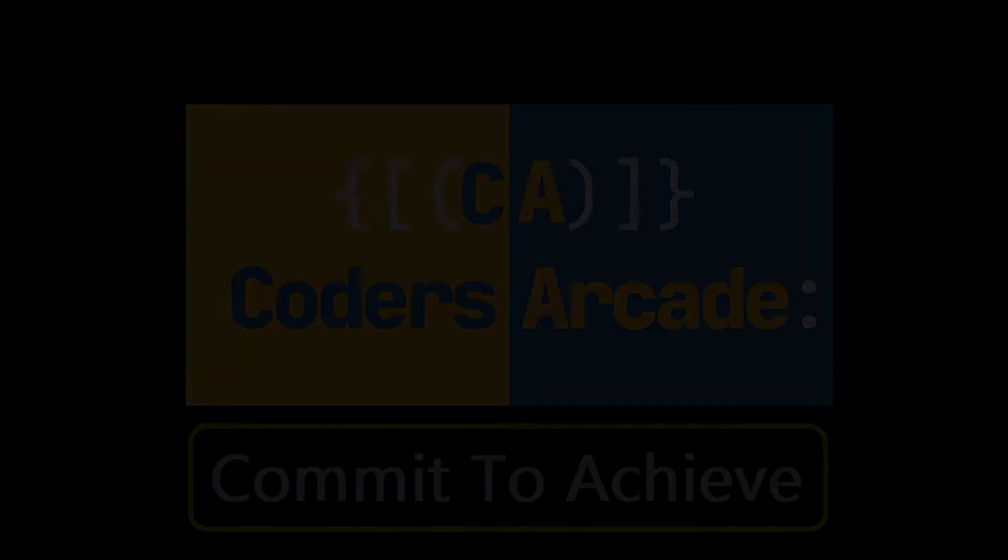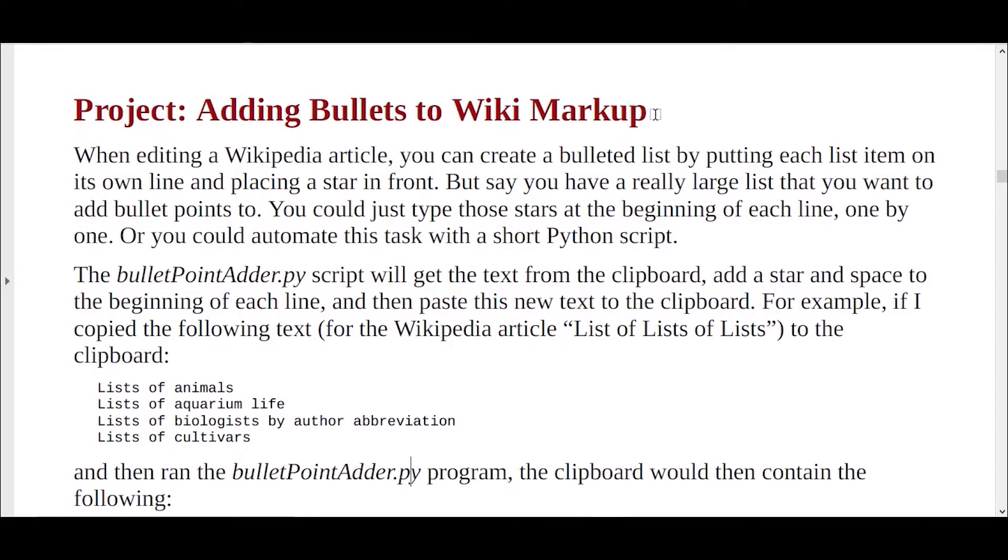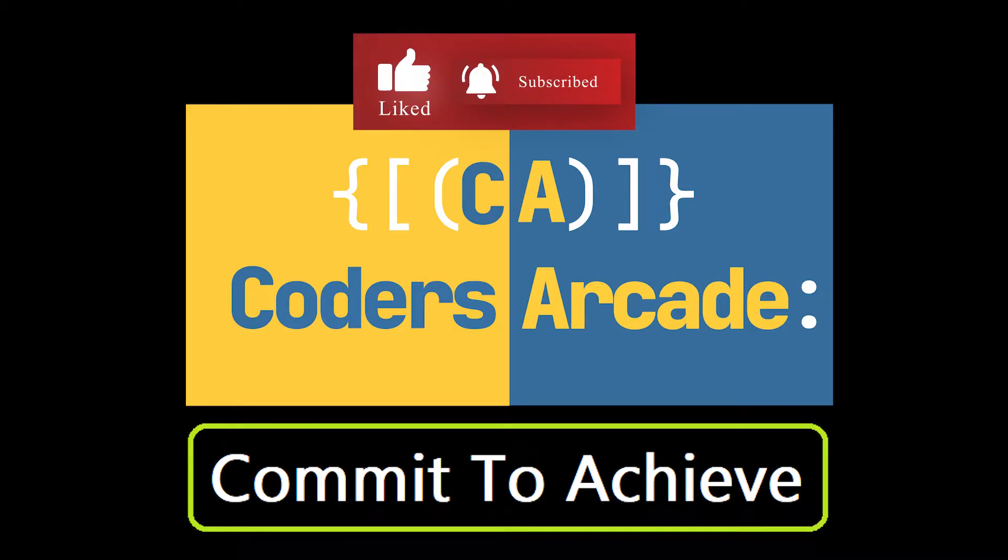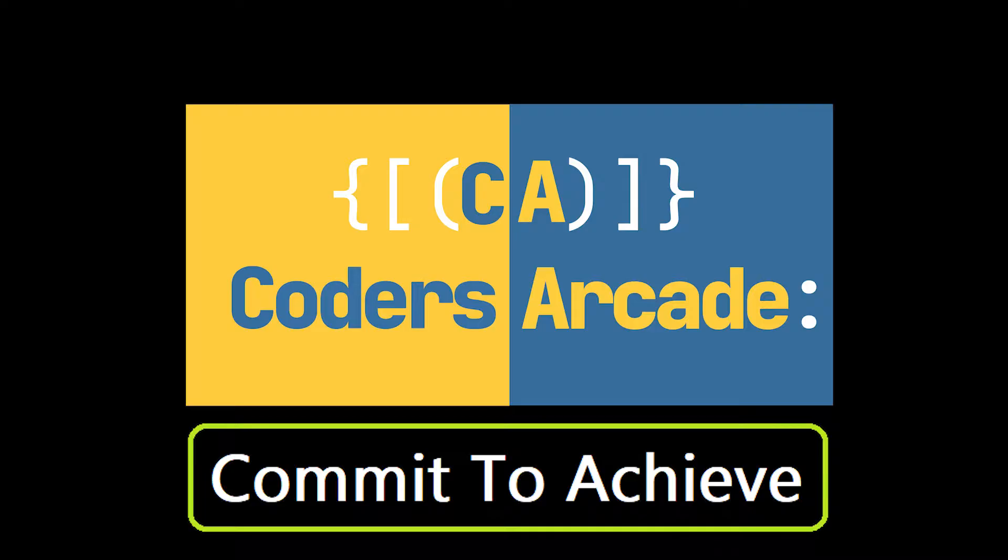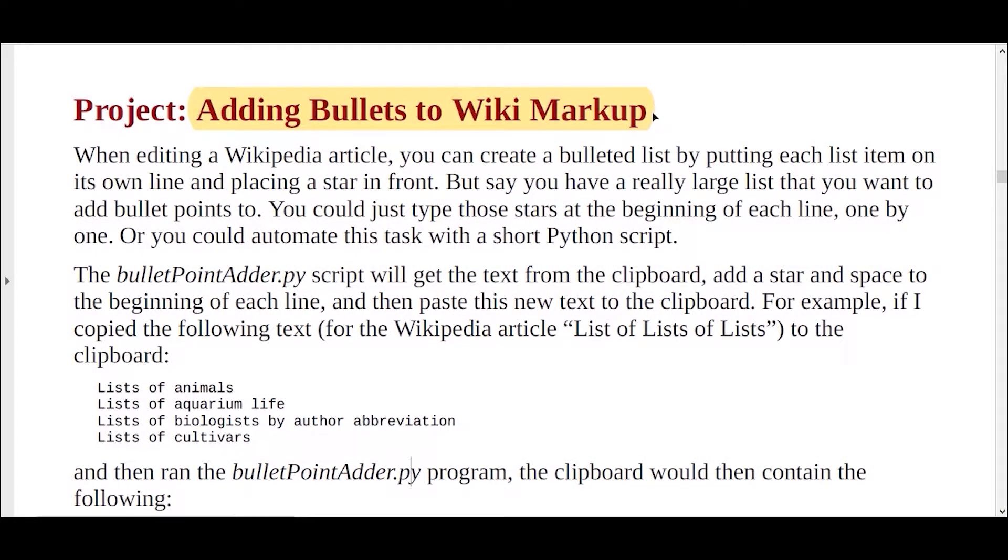Hello everyone, welcome to our channel Codes Arcade. In this session, I will be showing you a new project in Python. The topic is adding bullets to wiki markup. Before starting this video, I would like to request you to please like and share our videos and also subscribe to our channel Codes Arcade and press the bell icon so that you receive notifications regarding our latest updates and you do not miss out on our future uploads. Thank you. So, let's get started.